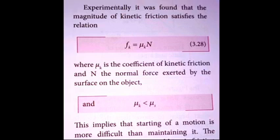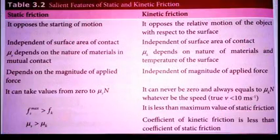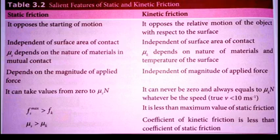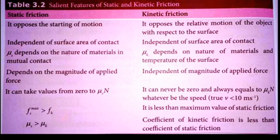The salient features comparing static friction and kinetic friction are given in the table. First point: static friction opposes the starting of motion — when a force is first applied to move a stationary object, the opposing force is static friction. For kinetic friction, it opposes the relative motion of the object with respect to the surface — it acts when the object is already moving.